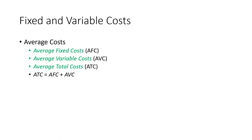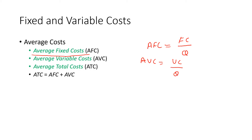Average Fixed Cost (AFC) equals fixed cost divided by quantity. Average Variable Cost (AVC) equals variable cost divided by quantity. Average Total Cost (ATC) equals total cost divided by quantity — giving us fixed cost per unit, variable cost per unit, and total cost per unit respectively.